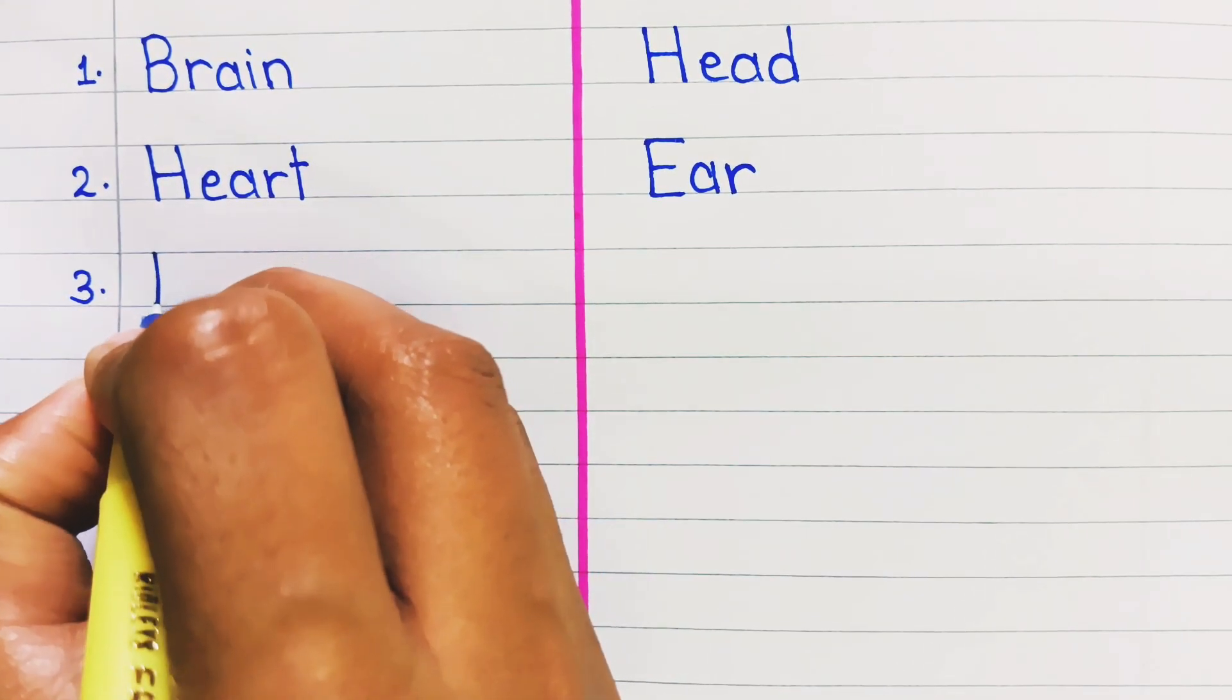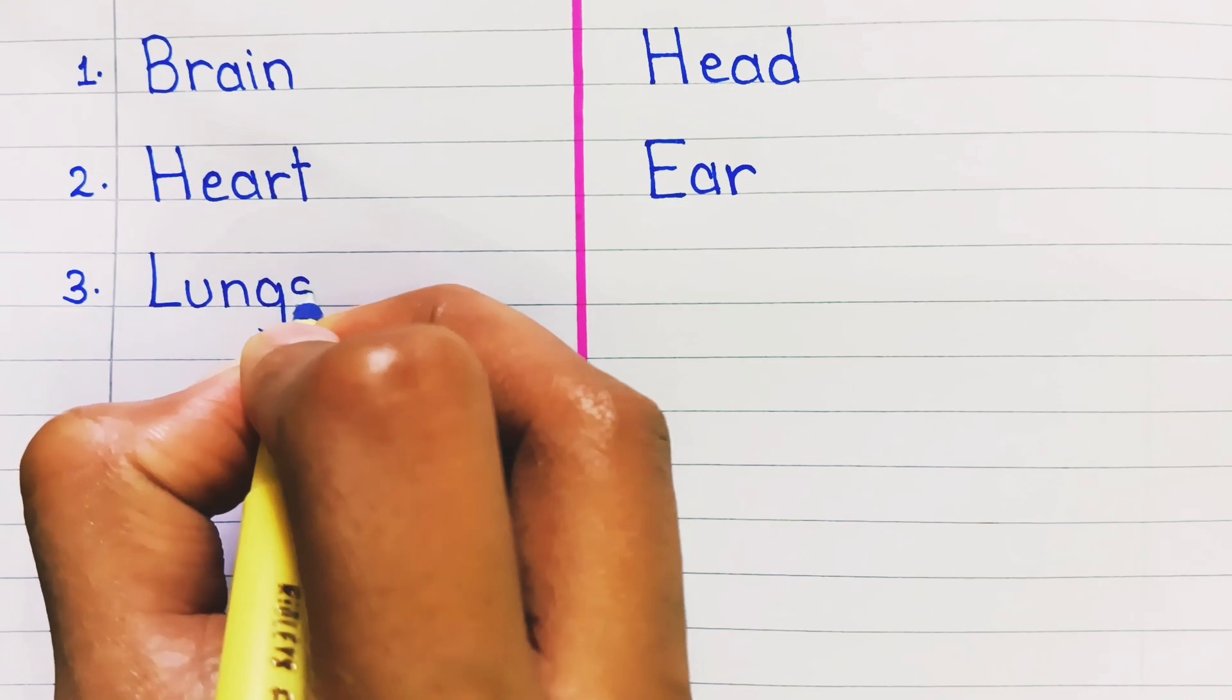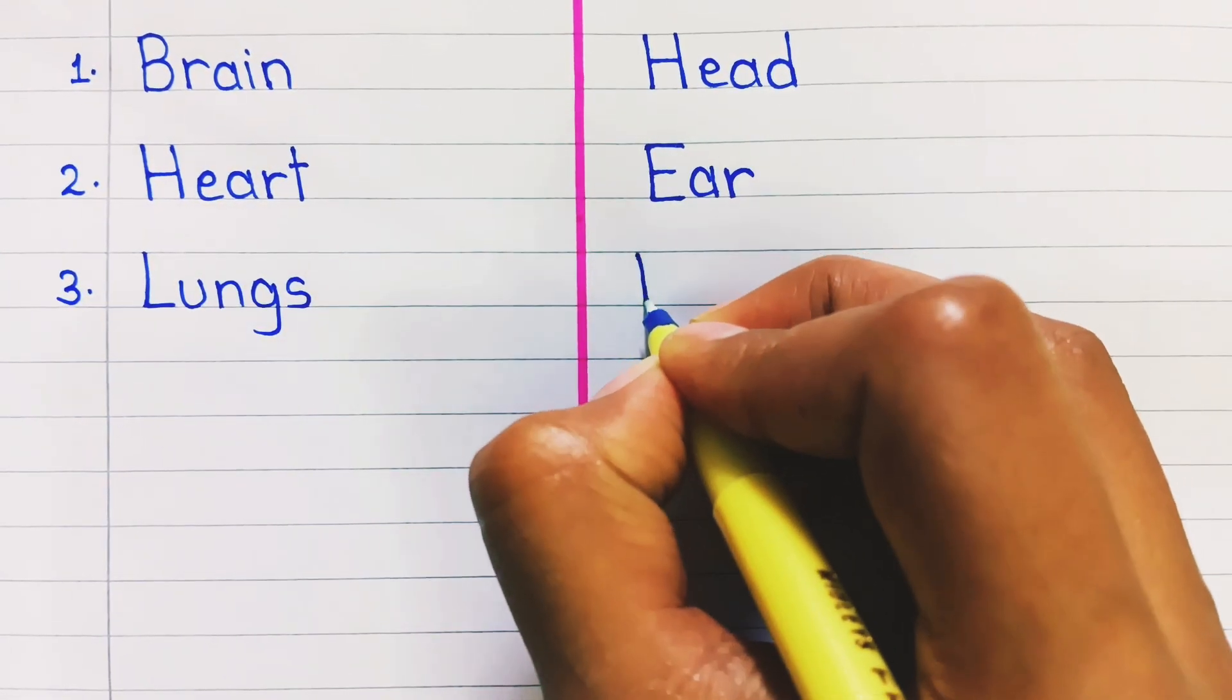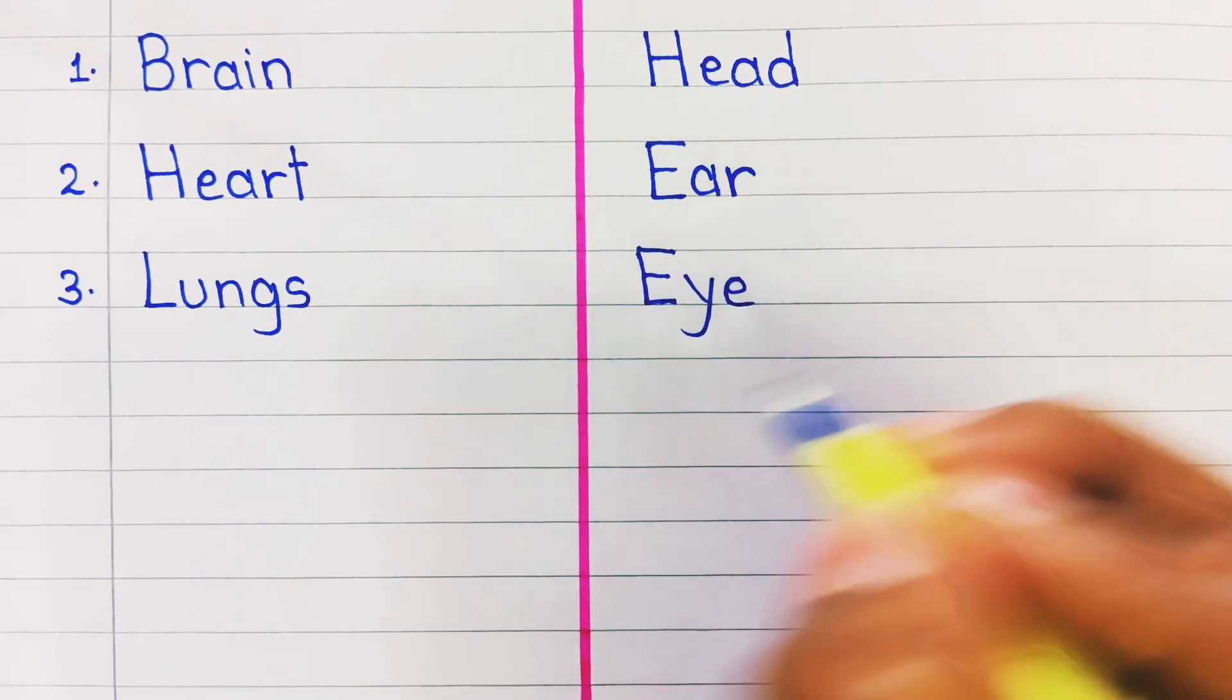3. Internal organ is lungs. External organ is eye.